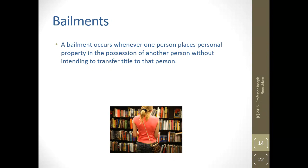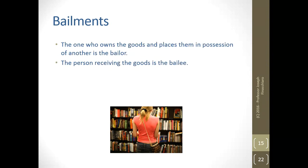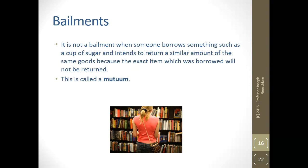A bailment occurs whenever one person places personal property in the possession of another person without intending to transfer title to that person. You are giving something to someone for use but you retain the ownership — you are loaning it to somebody. The one who owns the goods and places them in possession of another is the bailor; the person receiving the goods is the bailee. Note: it is not a bailment if you are given something, use it, and replace it with something identical — that is called a mutuum, because the original item was used up entirely. Bailment refers to property that is given, used, and returned as the identical piece of property.